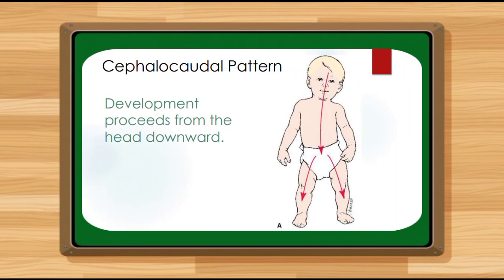After the proximodistal pattern, we have the cephalocaudal pattern. The cephalocaudal pattern means development proceeds from the head downward. During infancy, the greatest growth always occurs at the top of the head, with physical growth in size, weight, and feature differentiation gradually working its way down from the top to bottom — neck, shoulders, middle trunk, and so on. These development patterns are also common to both boys, Kian and Brian.